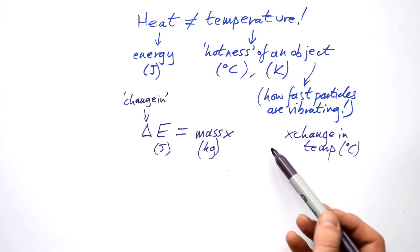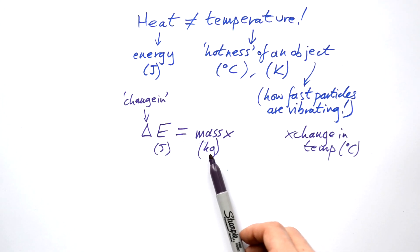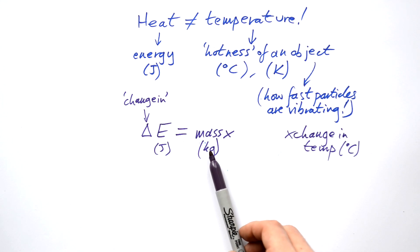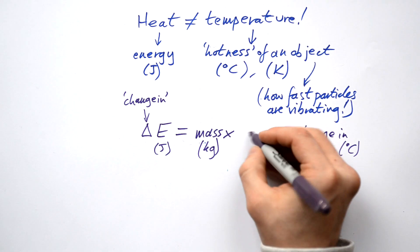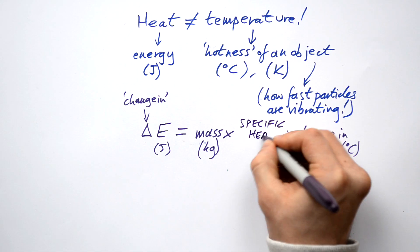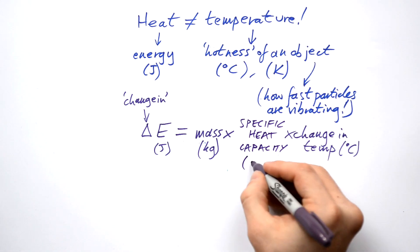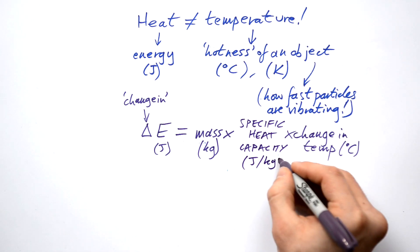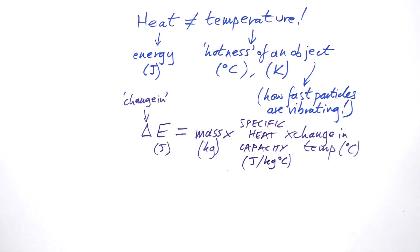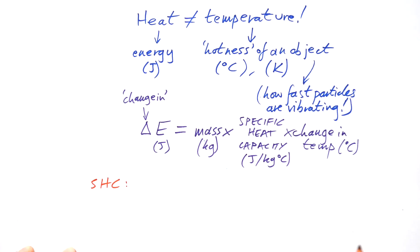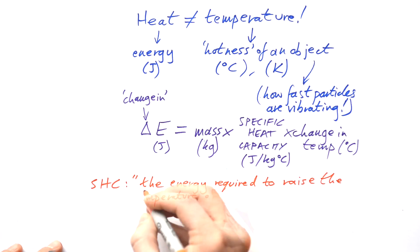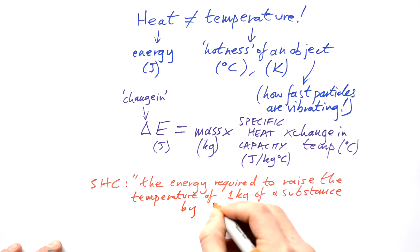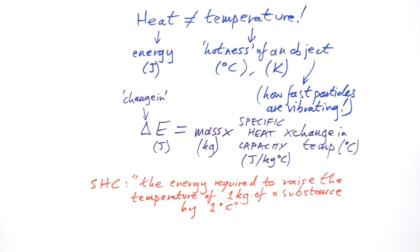We're missing something here — something that's going to be specific for a certain material. If you give one kilogram of iron a thousand joules and you give one kilogram of water a thousand joules, they're not going to end up at the same temperature. We call this missing quantity specific heat capacity, and its units — if we rearrange — are joules per kilogram per degree Celsius, or joules per kilogram per Kelvin. We can call this SHC for short.